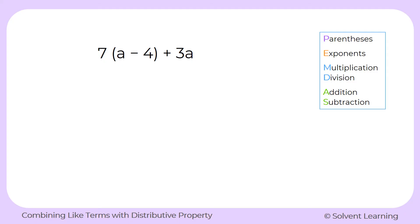We do have some multiplication here. We have 7 next to a set of parentheses, so that means the 7 is being multiplied by what's inside the parentheses. We also have some multiplication with the 3a — 3 is being multiplied by a — but since 3a is already as simplified as it can be, there's nothing we can do with that term. Our first term, 7 times a minus 4, can be simplified, but we have to use the distributive property. With the distributive property, we're really just using multiplication.